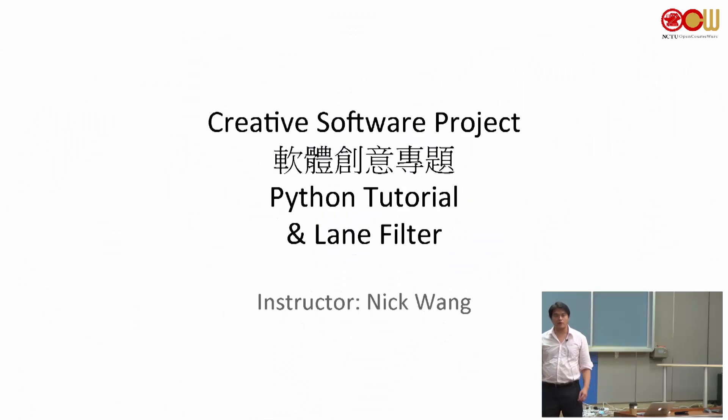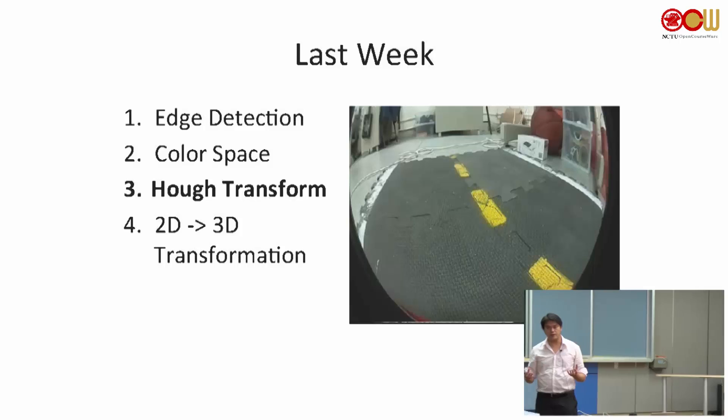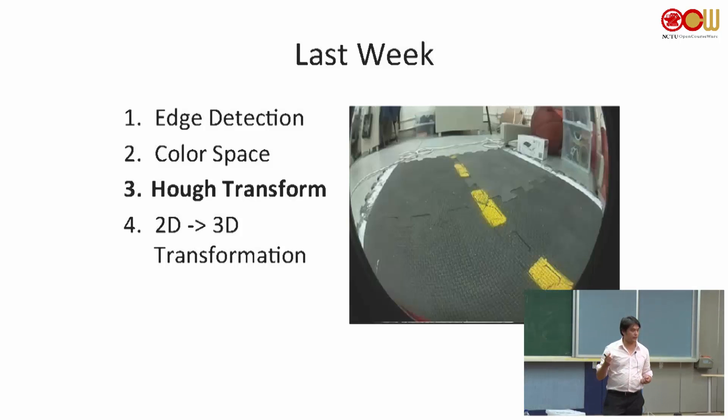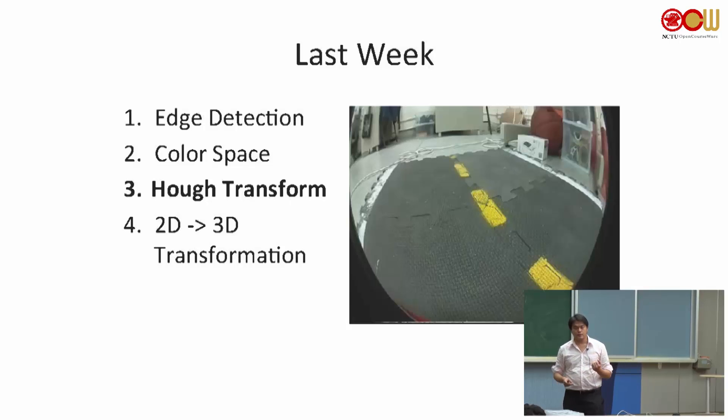Last week we talked about using OpenCV, using the canny edge detection, also the color space and the Hough line P, using some of the OpenCV functions in order to get the edges of the lines. And we also talked about the 2D to 3D transformation by the calibration matrix, the intrinsic and the extrinsic. Today we will reuse some of these concepts, especially the Hough transform.